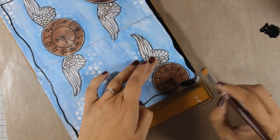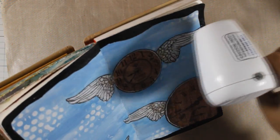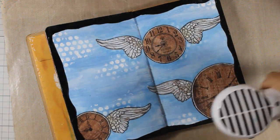Now I am using my heat gun to speed up the drying process of the black acrylic paint.